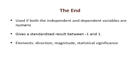In this presentation, we learned about Pearson's R. Pearson's R is used when the independent and dependent variable are both numeric. The coefficient is a standardized one with a value ranging between minus 1 if the correlation is perfectly negative to plus 1 if the correlation is perfectly positive. If there is no relationship, the correlation is zero. Its elements include direction, magnitude, and statistical significance.